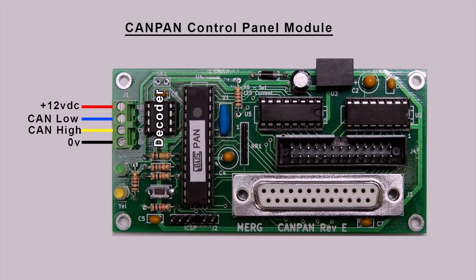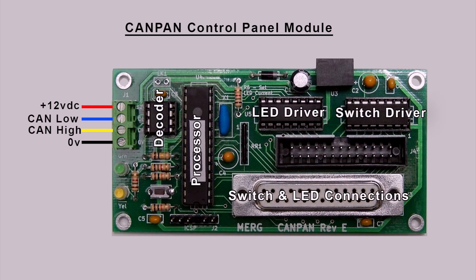All CBUS nodes have a decoder. The decoder is the interface between the data bus and its processor. We can see the decoder, the processor, and the rest of the circuit — the main components being the switch and LED connections, an LED driver, and a switch driver. The switch driver drives the matrix up to the switches, and the LED driver supplies current out to the LEDs.